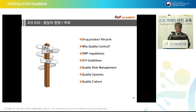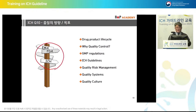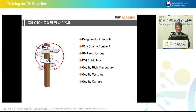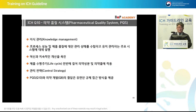When it comes to the goals in quality, regulatory approval is important, but throughout the drug product lifecycle, quality needs to be well controlled and maintained. GMP regulation is important in that sense, and we must also refer to ICH guidelines. Quality risk management and quality systems need to be well established and well utilized — that is important in establishing quality culture.